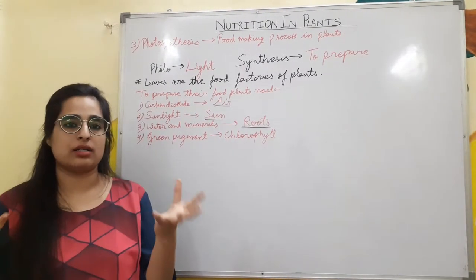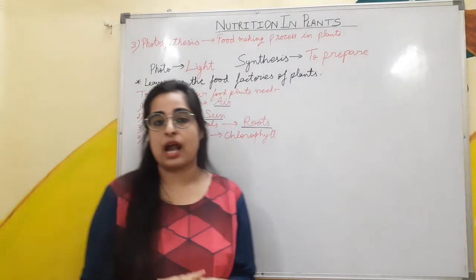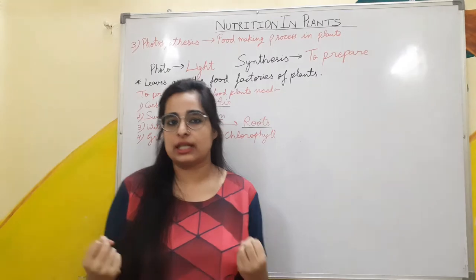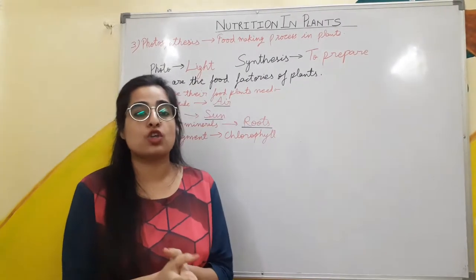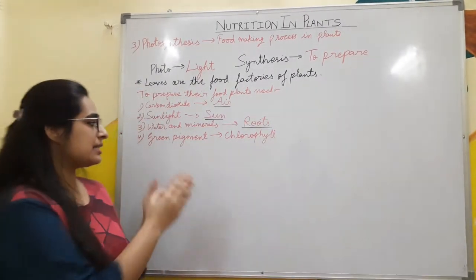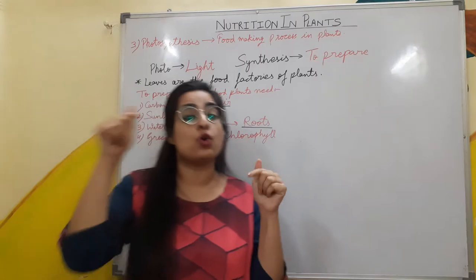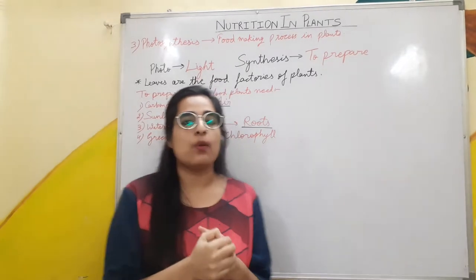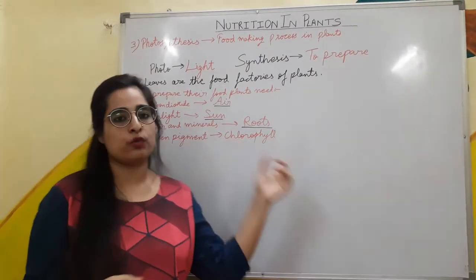The third ingredient is water and minerals, and the fourth one is chlorophyll, which is a green pigment. You must have seen plants of green color — that green color is because of this green pigment present in those plants, which is known as chlorophyll.